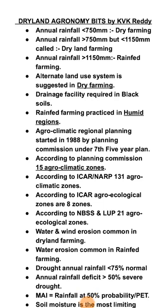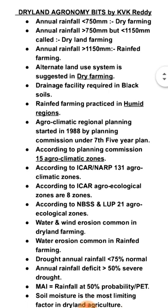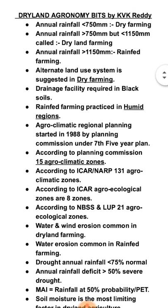Hello guys, welcome to Agriculture Tutorials. Today I am discussing dryland agronomy bits. Annual rainfall less than 750 mm is dry farming. Annual rainfall more than 750 mm but less than 1150 mm is called dryland farming. Annual rainfall more than 1150 mm is called rainfed farming.